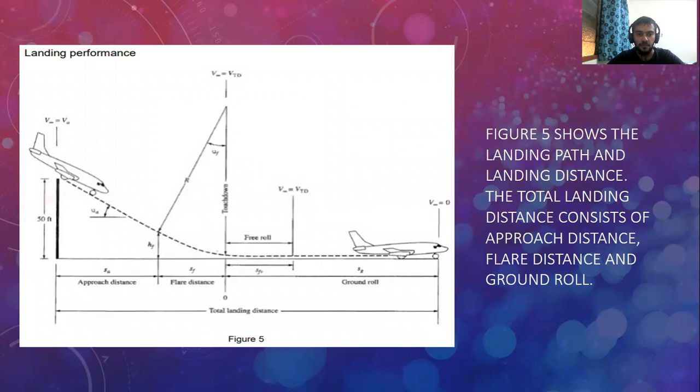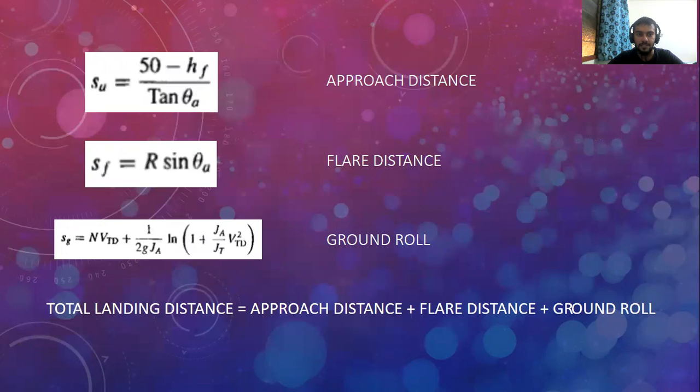As for the landing performance, these are the processes for landing, which is quite longer than takeoff. Figure 5 shows the landing path, which includes approach distance, flare distance, and ground roll. This is the particular formula for each of it. The total landing distance is the summation of all these three.